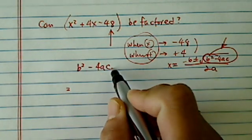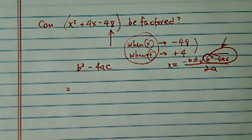So let's check if b squared minus 4ac, if it's a perfect square or not.